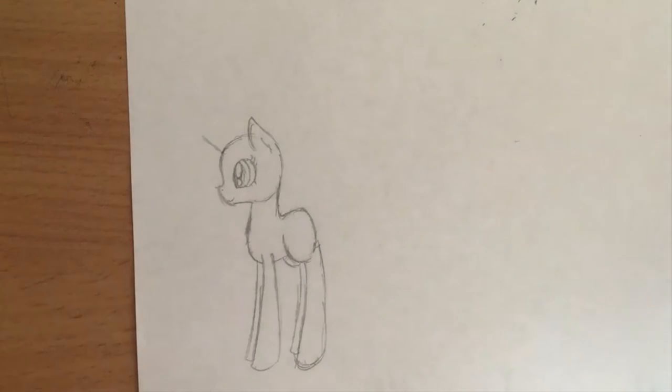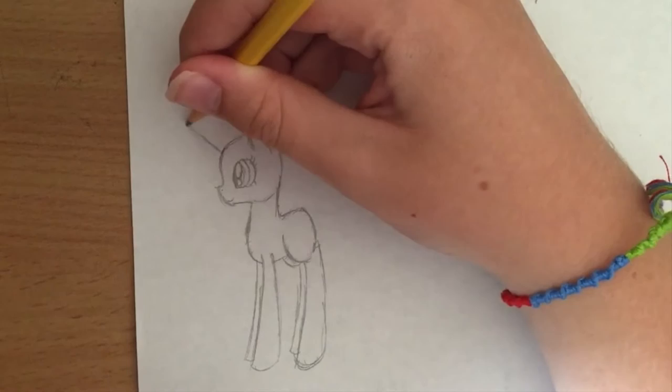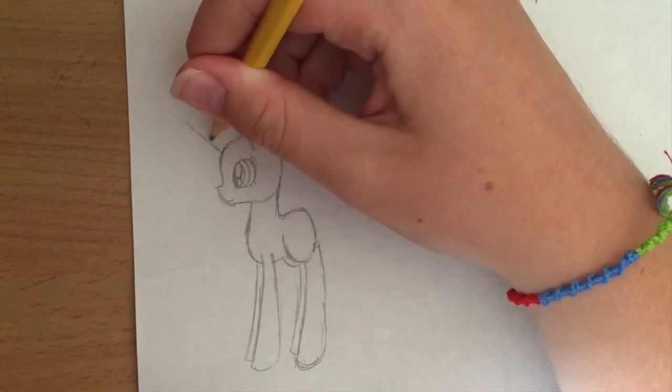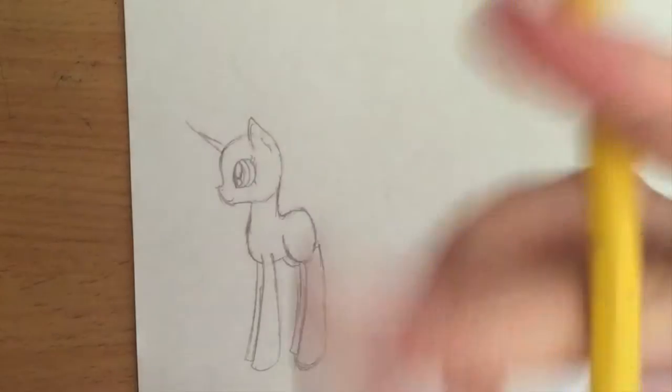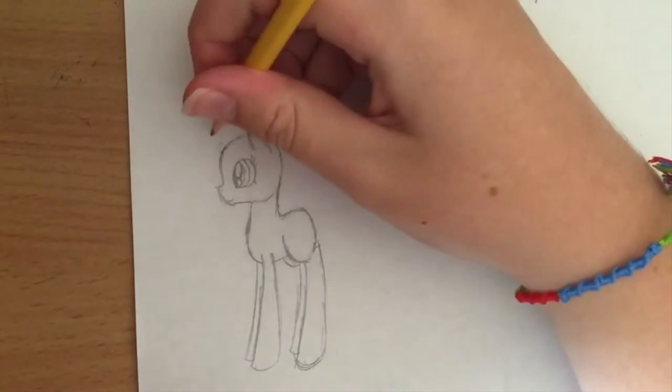If it's an alicorn, the horns tend to be a bit longer like that. If it's a regular unicorn, the horns are usually shorter.